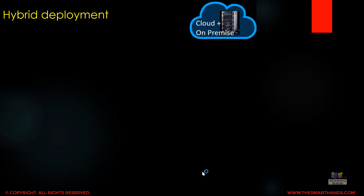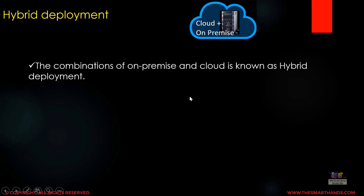We have now discussed the three deployment options: the first was on-premise, the second was cloud, and the third is hybrid deployment. The combination of on-premise and cloud is known as hybrid deployment.